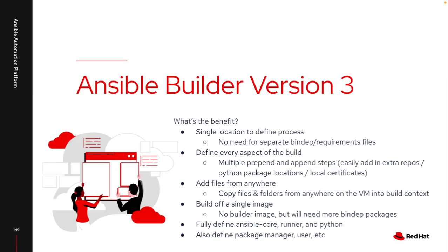I can now also fully define what version of Ansible Core, what version of Runner, what Python package, and where that lives. All of that can be fully defined during the build process, as well as what package manager I'm using and what user. This really gives me flexibility to leverage any universal base image that exists, especially if I need to build older Ansible Core versions or leverage older versions of Python that my systems require.